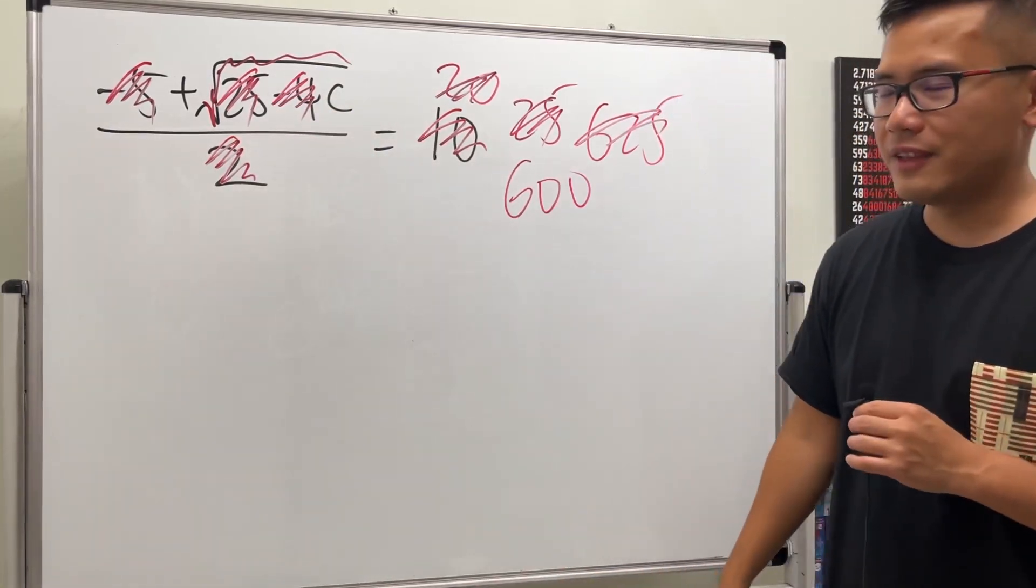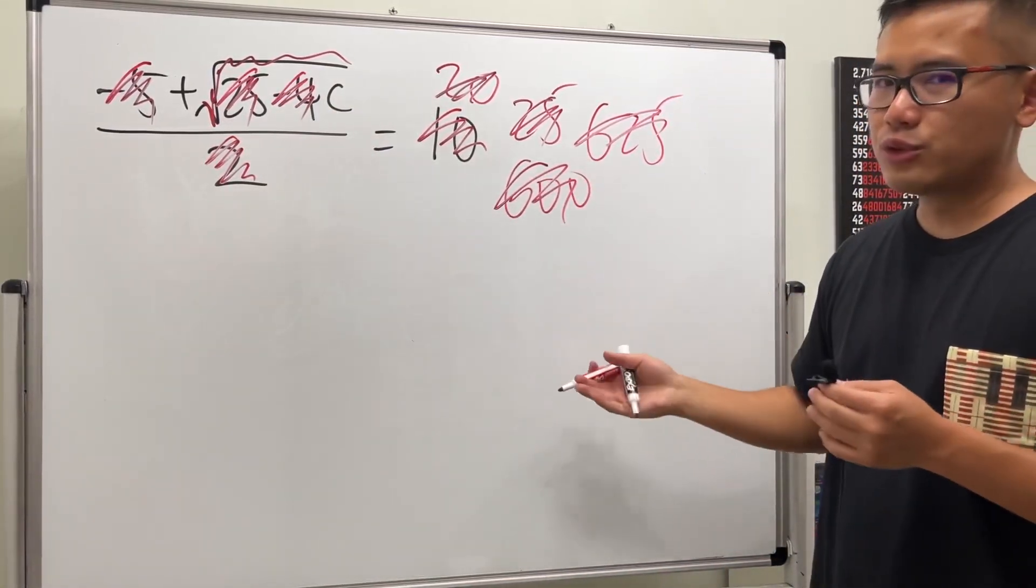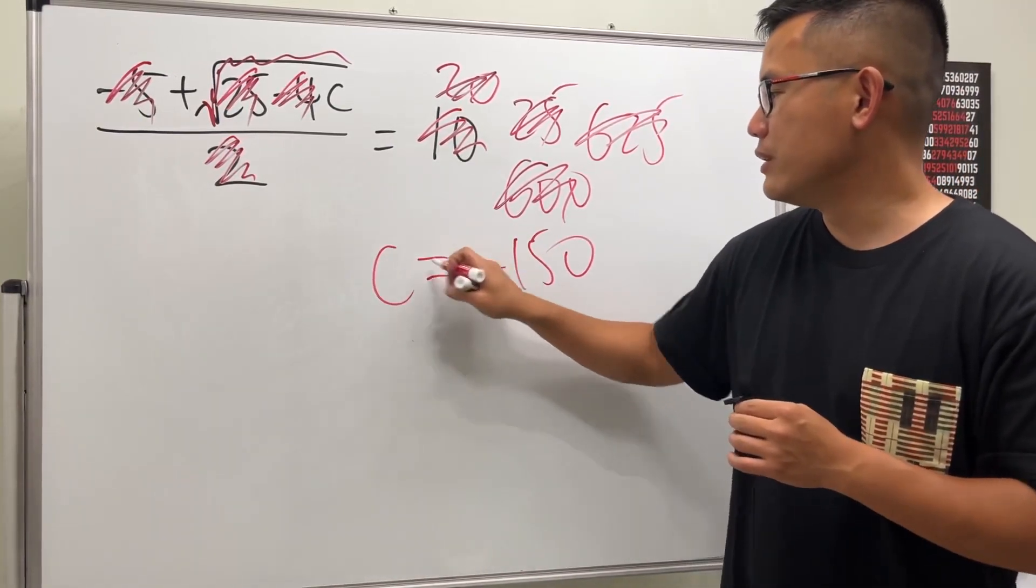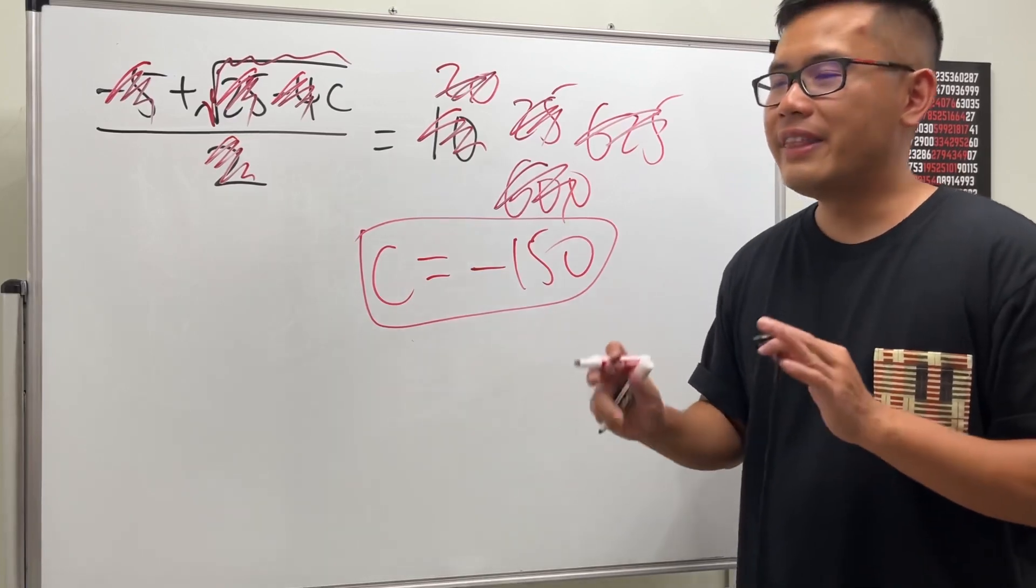We'll have to get rid of this negative 4 by dividing both sides by negative 4. So get rid of this. 600 divided by negative 4 is negative 150. So c is equal to negative 150, and then you are done.